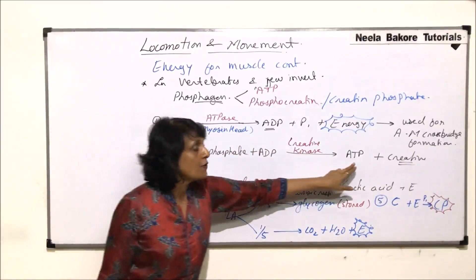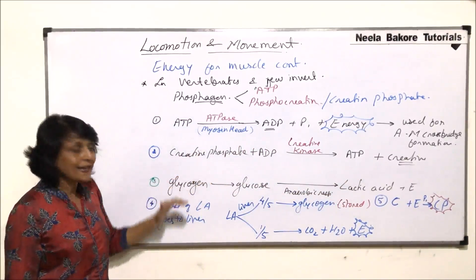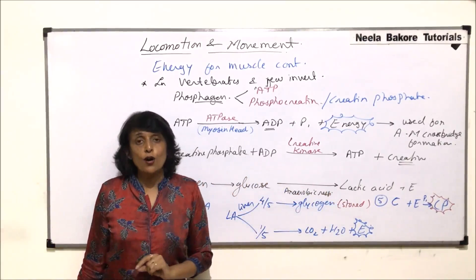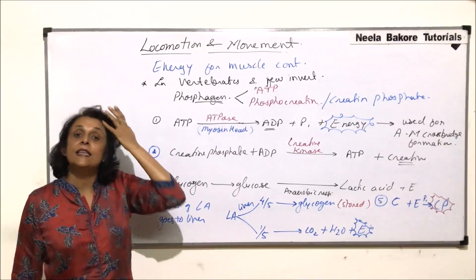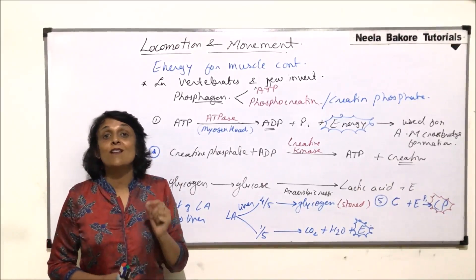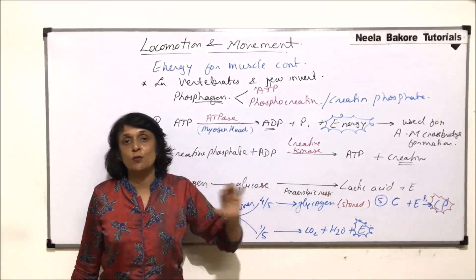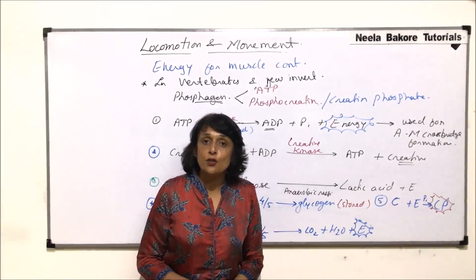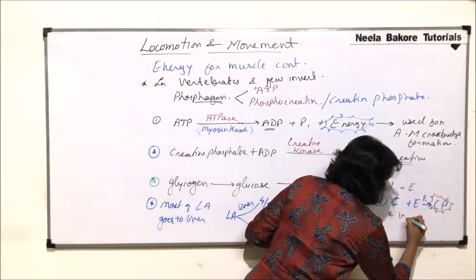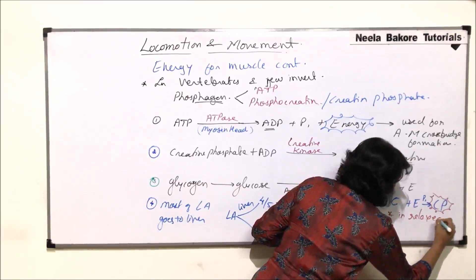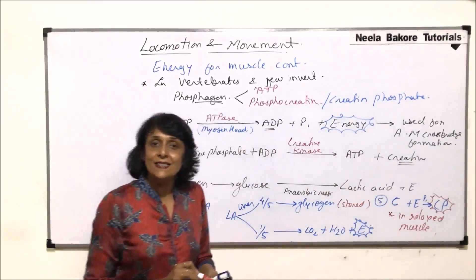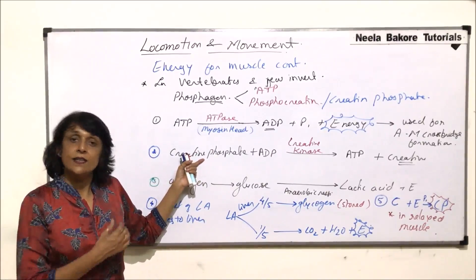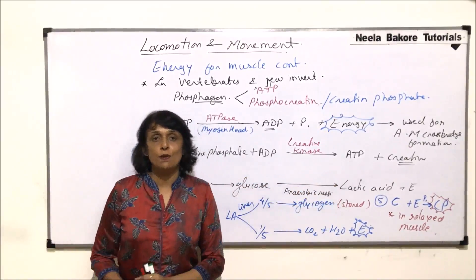If the stock of ATP is exhausted, the other phosphagen — creatine phosphate — comes into action and regenerates ATP. If that is also insufficient, anaerobic breakdown takes place, resulting in lactic acid formation. If lactic acid accumulates in the muscle, it causes muscle fatigue. Creatine phosphate is regenerated in relaxed muscle, so that whenever needed it can be used to produce ATP for muscle contraction.